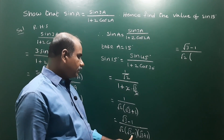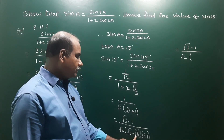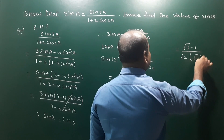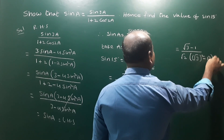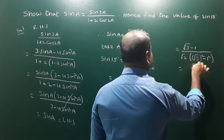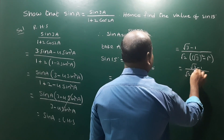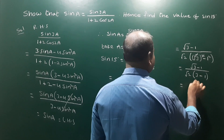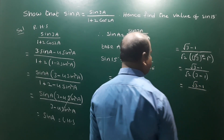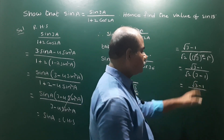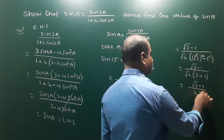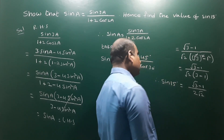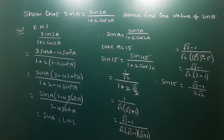Applying the identity (a minus b)(a plus b) = a square minus b square: (root 3)² minus 1² equals 3 minus 1 equals 2. So we get (root 3 minus 1) divided by root 2 into 2, which is 2 root 2. Therefore sin 15 degrees is equal to (root 3 minus 1) divided by 2 root 2.